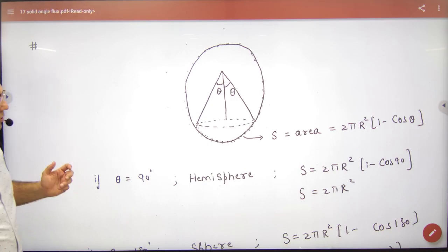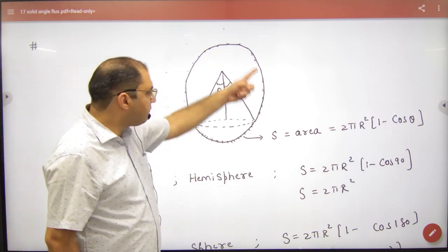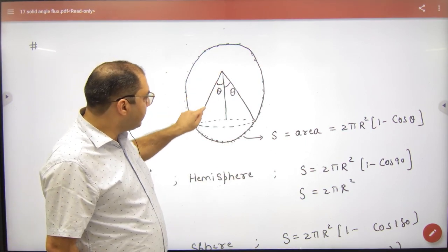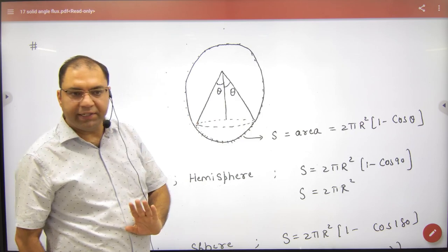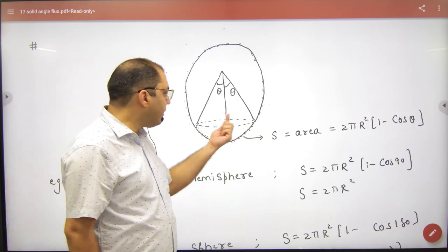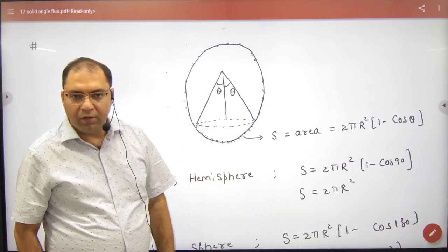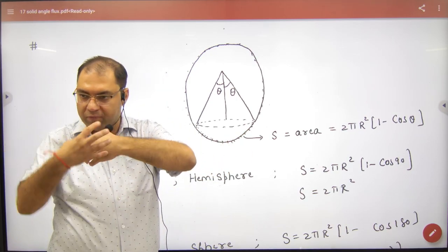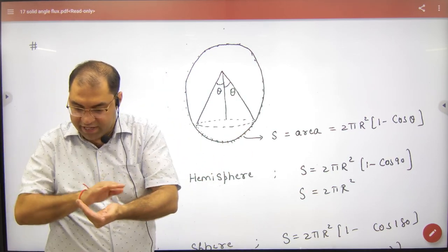Suppose you have a sphere. This sphere has a theta angle forming a disc. This portion you are seeing will be a small arc - it's not just a curve, it's a whole curved surface.